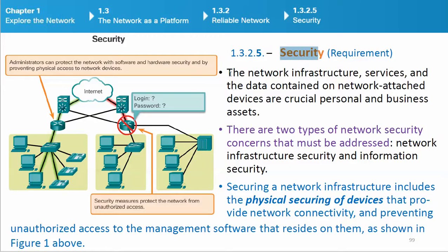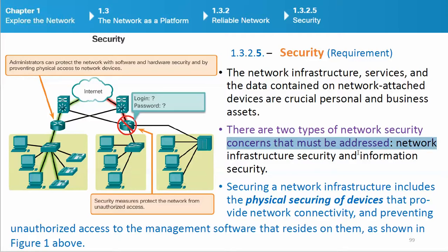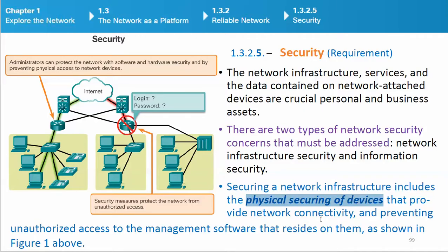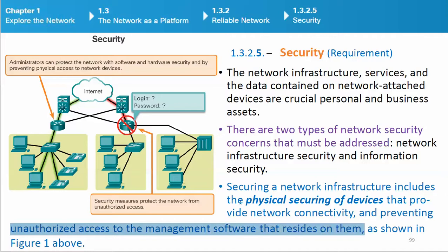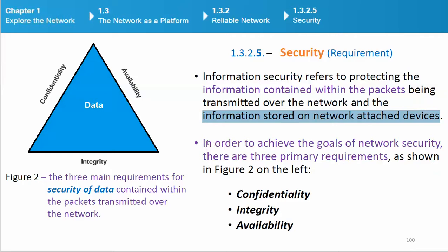Security: The network infrastructure, services, and the data contained on network-attached devices are crucial personal and business assets. There are two types of network security concerns that must be addressed: network infrastructure security and information security. Securing a network infrastructure includes the physical securing of devices that provide network connectivity and preventing unauthorized access to the management software that resides on them. Information security refers to protecting the information contained within the packets being transmitted over the network and the information stored on network-attached devices. In order to achieve the goals of network security, there are three primary requirements: confidentiality, integrity, and availability.